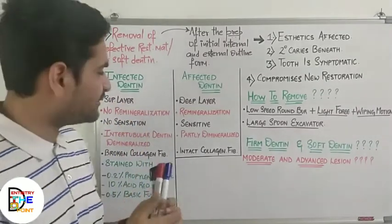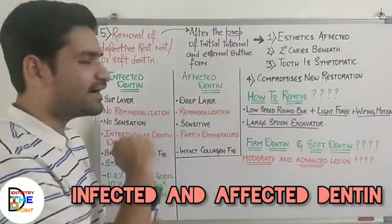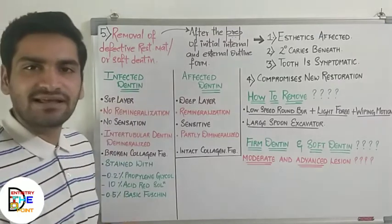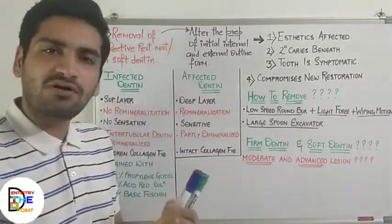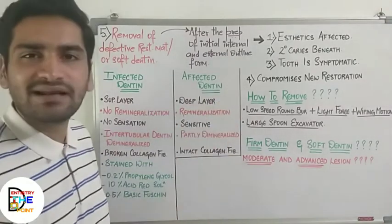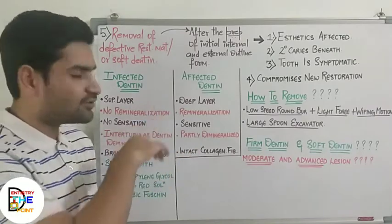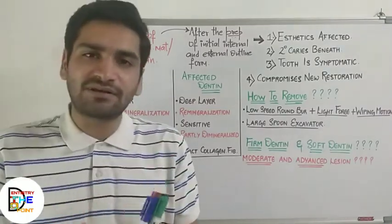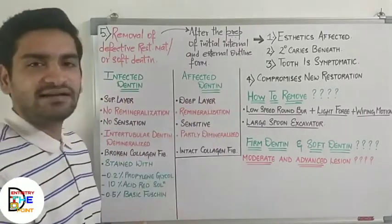Now, what is infected dentine versus affected dentine? Infected dentine is the superficial layer of the demineralized dentine. The deep layer is formed by affected dentine. Infected means already infected; affected means not yet infected — just affected by the process. There are no chances of remineralization of infected dentine because the collagen fibers are demineralized and have lost their three-dimensional structure capable of remineralization. Affected dentine still has chances of remineralizing.